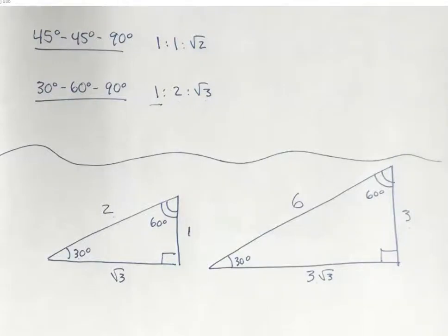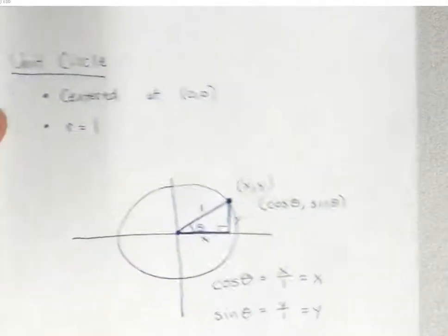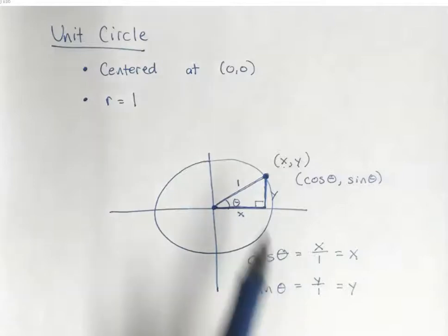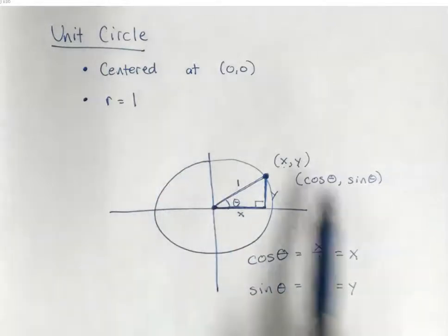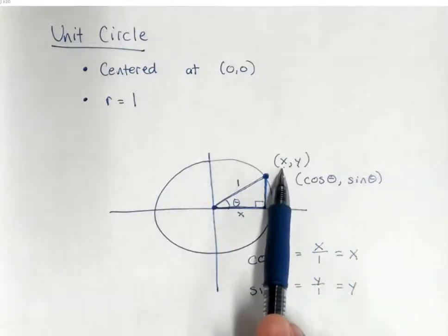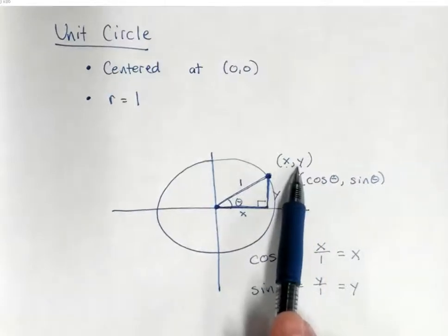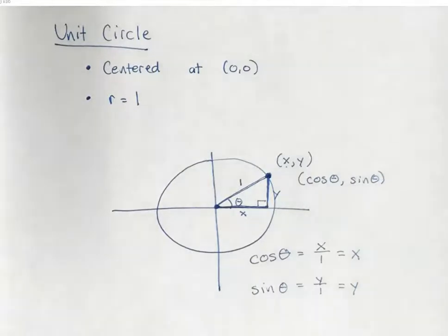The 30-60-90 and 45-45-90 ratios are definitely useful when evaluating trig functions. The main thing to remember is that the unit circle is centered at (0,0) with radius 1, and the x-coordinate of a point on the unit circle gives our answer for cosine of the angle, while the y-coordinate gives our answer for sine of the angle. Let's look at a couple of examples.